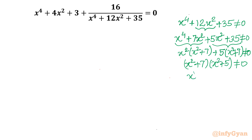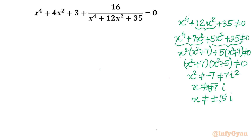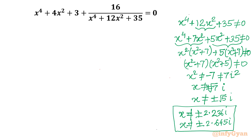So the denominator factors as (x² + 7)(x² + 5). From x² + 7 ≠ 0: x cannot equal ±√7·i, which is approximately ±2.645i. From x² + 5 ≠ 0: x cannot equal ±√5·i, which is approximately ±2.236i. These values are not accepted.